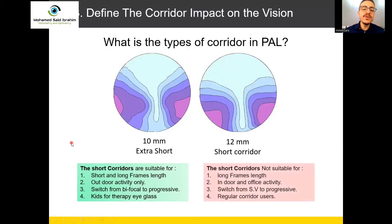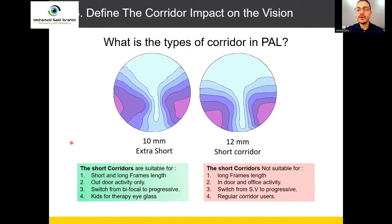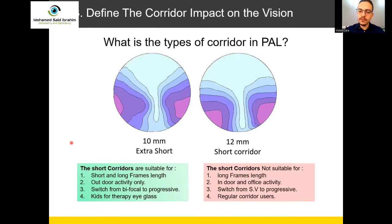What is not suitable for short corridor? Long frames could be not suitable for short corridor, because short corridor gives more distortion than normal corridor. If you fit a very long frame with a very short corridor lens, the customer will experience much more distortion. You can fit it, but we recommend not fitting short corridor for long frames — unless the customer specifically needs it.